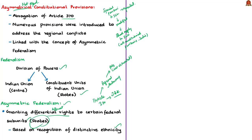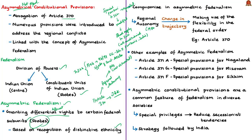Since 1954, almost 94 out of 97 entries in the Union List under Schedule 7 and two-thirds of constitutional articles have been extended to Jammu and Kashmir, approved by the Supreme Court. Regional parties grew significantly between 1989 and 2014, making regional autonomy seem unstoppable. But now this trend has changed — the current BJP government has repealed the special provisions under Article 370 and proposed bifurcating Jammu and Kashmir into two Union Territories. The bill passed in both Houses of Parliament.